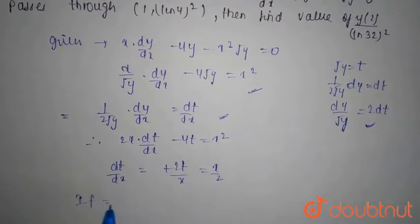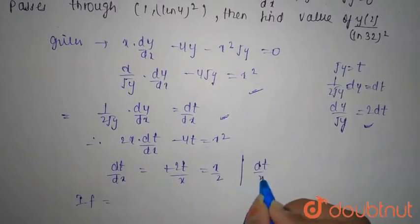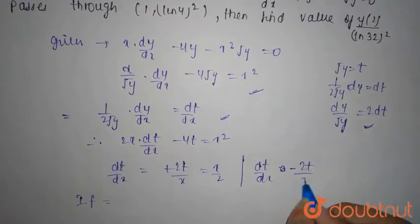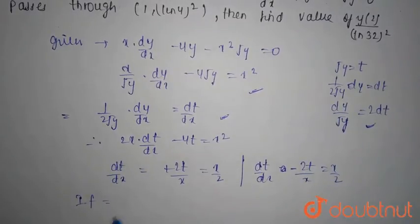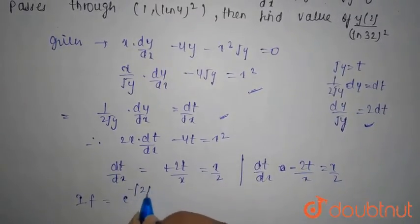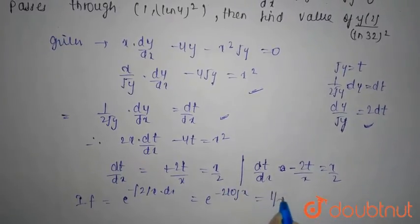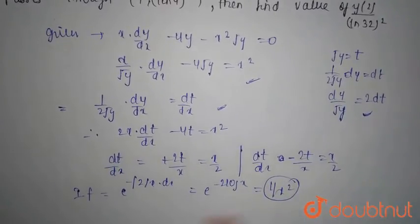Now, integrating factor is e to the power minus 2/x dx which is nothing but e to the power minus 2 ln x, that is 1/x². So this is the integrating factor.